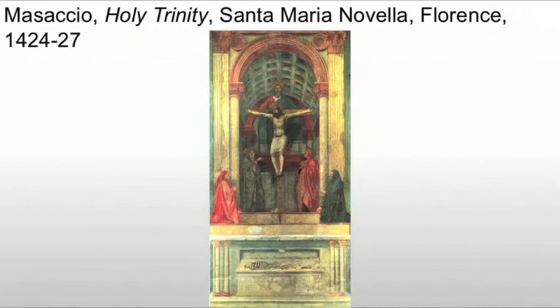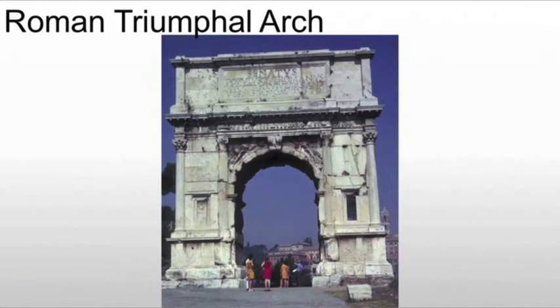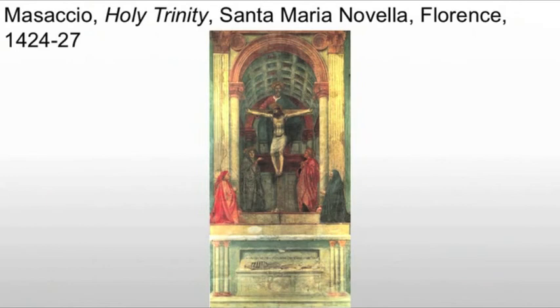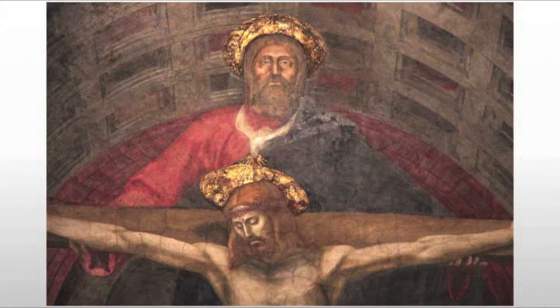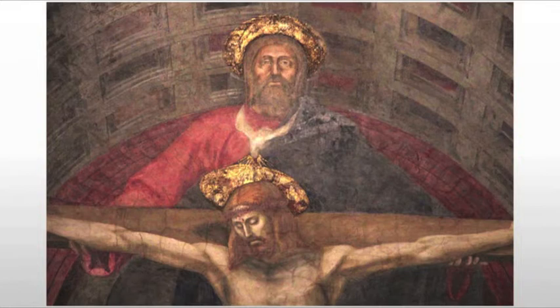The barrel vault in the background is reminiscent of a Roman triumphal arch — it's almost like we're looking inside the arch. What we're seeing in the image is the Virgin and St. John appearing on either side of the crucifix. God the Father remains behind the cross, presenting it to the worshippers and reminding them of the sacrifice being made. The Holy Spirit appears between God's head and Christ, represented by a white dove with gold lines shining down.